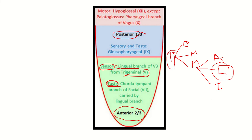So the lingual nerve is a branch of the mandibular division of the trigeminal nerve. The sensory innervation of the anterior two-thirds of the tongue is carried by the lingual branch, which is a branch of the mandibular nerve — a branch of cranial nerve five, the trigeminal nerve.